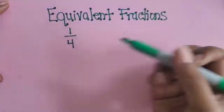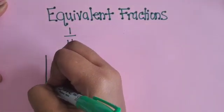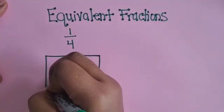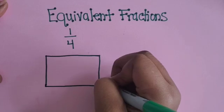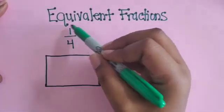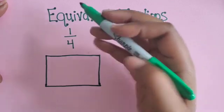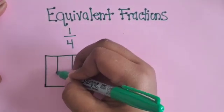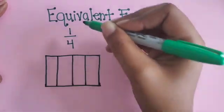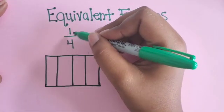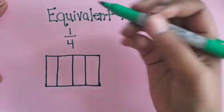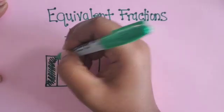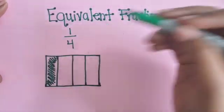If you're given the fraction 1 fourth, we can represent that by drawing a rectangular area model. I'm going to draw this rectangle and based on our fraction, the denominator is 4, so that tells us our total number of parts. I'm going to partition the rectangle into 4 equal parts, and then our numerator 1 on the top tells us how many of those parts are shaded in. So we're just going to shade in one of those 4 equal parts, and now we're representing 1 fourth.